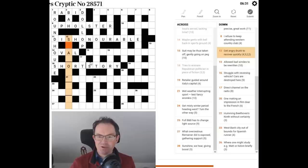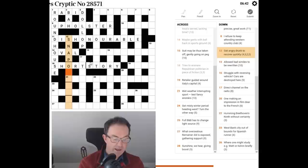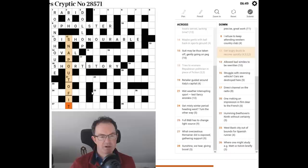So there's always two chances in a cryptic clue. So get angry drunk to recover quickly. Snap out of it. I'm thinking if you snap you get angry. If you're drunk you're out of it. So snap. So put those together. Snap and out of it. And we get snap out of it. Which is a phrase which means to recover quickly.